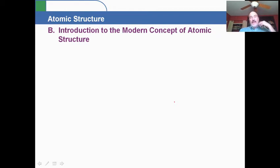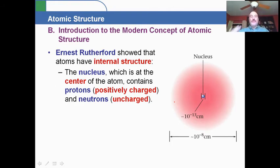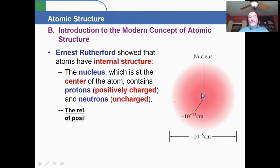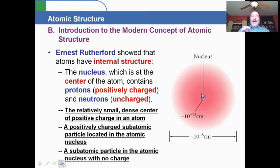Once we had this concept, he was able to develop a brand new model for the atomic structure. He showed that atoms have internal structure. He discovered the nucleus, which is a relatively small, dense center of a positively charged atom. Later on, another scientist helped him discover that the nucleus itself was made up of even smaller particles - protons and neutrons. Protons are positively charged subatomic particles located in the atomic nucleus, whereas neutrons are subatomic particles found in the nucleus but they have no charge. They just kind of sit there and take up space.